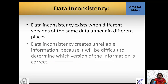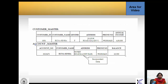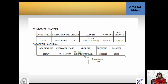Data inconsistency is an effect of data redundancy — it exists when different versions of the same data appear in different places, creating unreliable information because it is difficult to determine which version is correct. For example, Runa Sinha requested an address change in the accounts file, but the old address still reflects in the customer master file.